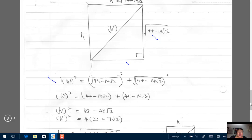This is the same expression: 44 minus 14 root 2 squared. Remember Pythagoras theorem: sum of the squares of the two shorter sides equals the square of the hypotenuse. I've done that and then I get this number 88 minus 28 root 2.